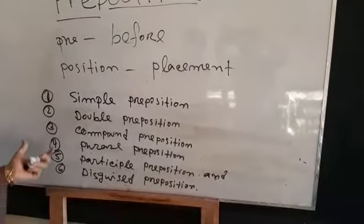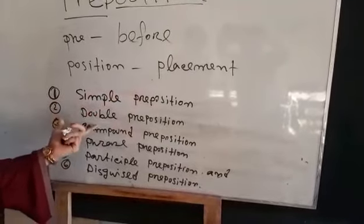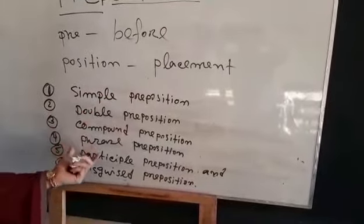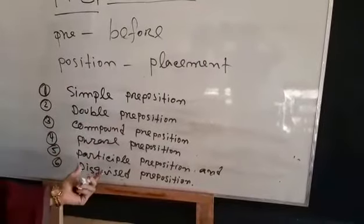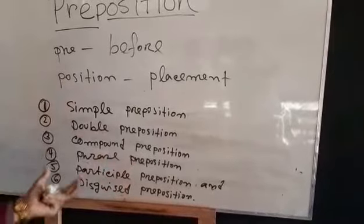There are six types of prepositions: simple prepositions, double prepositions, compound prepositions, phrase prepositions, participle prepositions, and disguised prepositions.